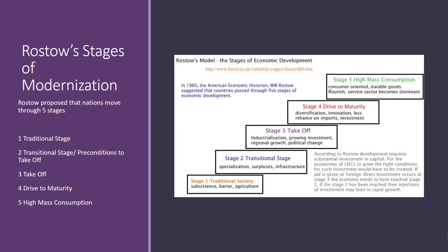Rostow proposed a five-stage model of modernization. You can see on the diagram to the right the five stages, and we will go through these individually. The first stage was the traditional stage — what we would see as being subsistence agriculture, a very basic traditional society. The second stage is what we call the preconditions for takeoff, or the transitional stage. This is where we start to see surpluses from agriculture, and these become invested into technology so that surpluses can grow.